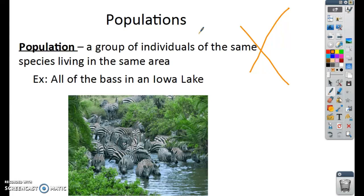So a population, just to review, is a group of individuals of the same species that all live in the same area. So the example here is all of the bass in an Iowa Lake, all of the zebras in this area, all of the squirrels in your backyard. Those are all populations. They have to be the same species and they have to be living in a specific area together.